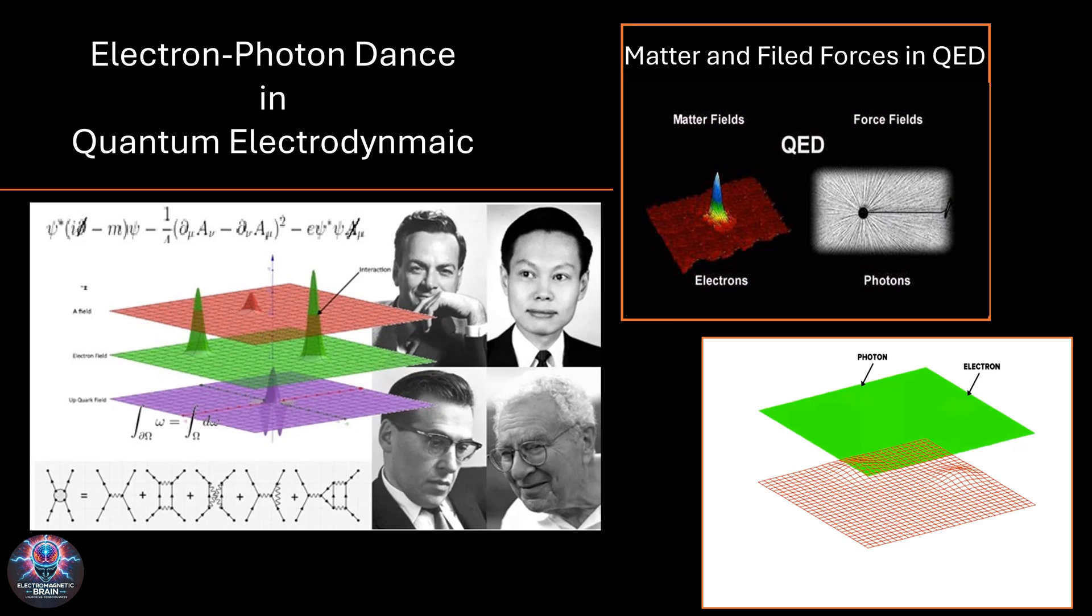And now, take a look at the bottom right corner. This is a simulation showing the fascinating process of electron-photon interaction in action. The video begins with an electron moving through the quantum field. As it interacts, a photon is created, transferring energy and causing the electron to become excited. This is a perfect example of how energy moves in the quantum world, following the precise mathematical rules of QED. This dance of electrons and photons is more than just theory. It's the foundation of how light, electricity, and magnetism function at their most fundamental level. From the smallest atoms to advanced technologies like lasers and quantum computing, QED is everywhere.